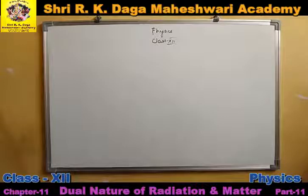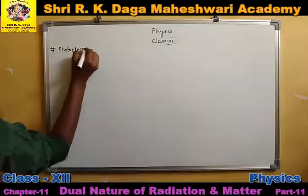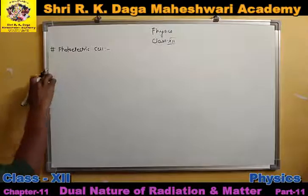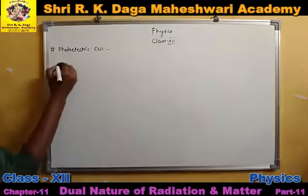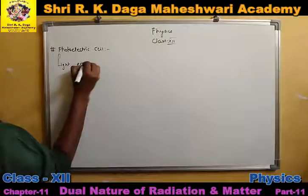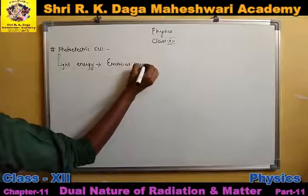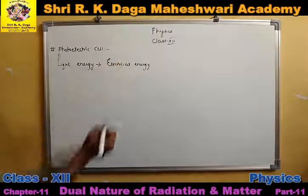The next topic is the photoelectric cell, which is basically the last topic of this chapter. What do we mean by the photoelectric cell, how many types are there, and how do they work — we will understand all that. As the name suggests, photoelectric means it is based on the principle of photoelectric emission. The working of these cells is based on photoelectric emission. Simply, we can say that photoelectric cells are cells which convert light energy into electrical energy.